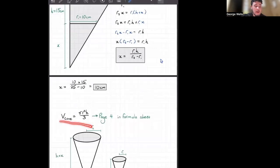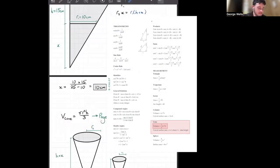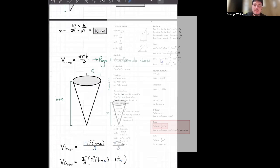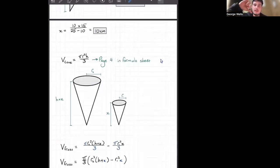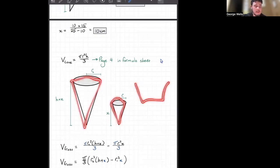which is given right here on page 4 of the formula sheet. I'll put up a little photo for you. So as I said at the beginning of the video, the frustum is just a big cone minus a little cone. So that's pretty much what I've got here. Big cone minus a little cone to give us our frustum.